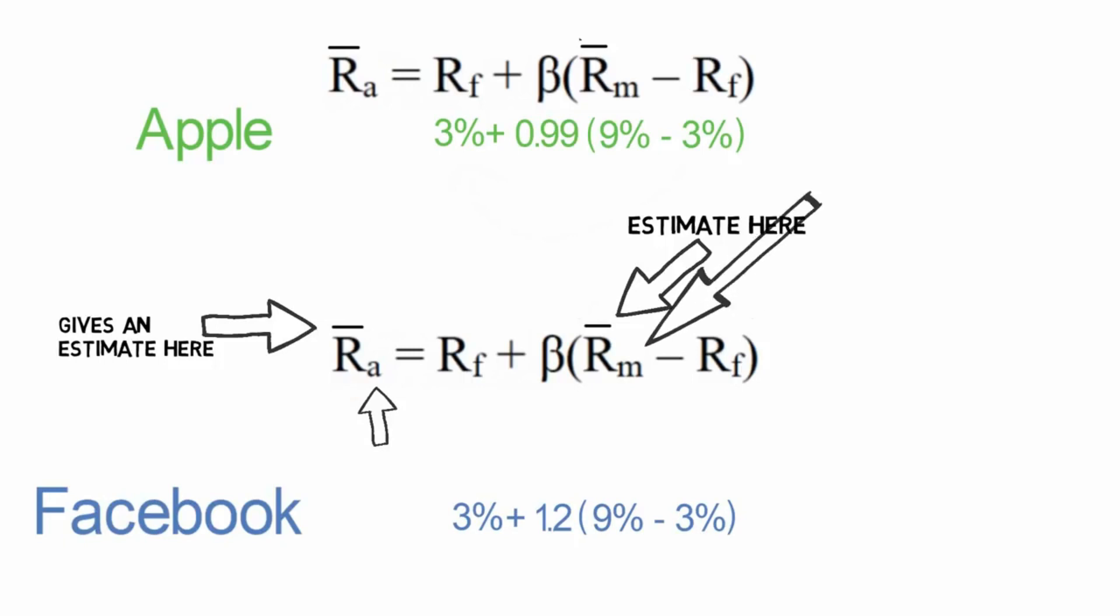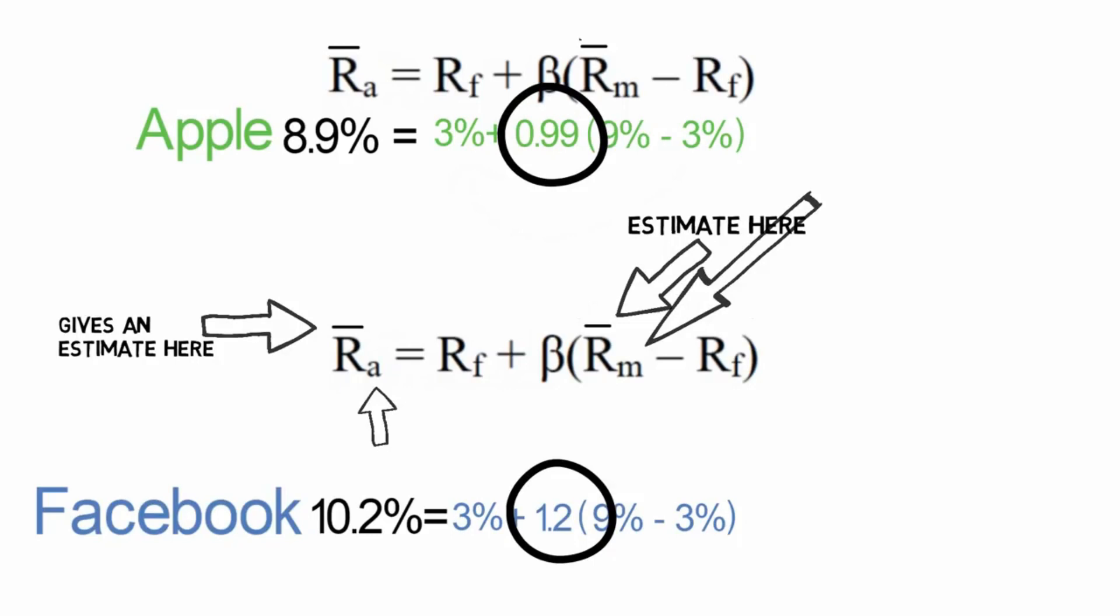So when we calculate these, we end up with 8.9% for Apple and 10.2% for Facebook. Now don't forget, the only difference between Apple's formula and Facebook's formula is their individual beta.